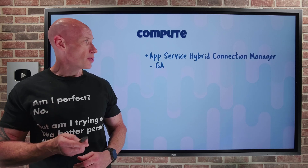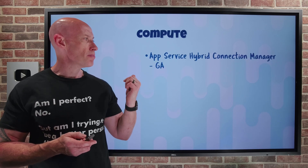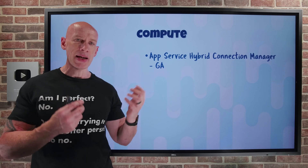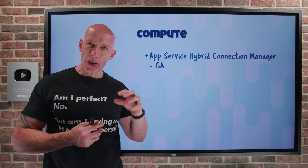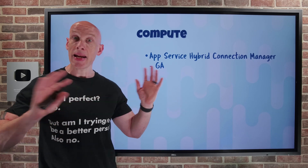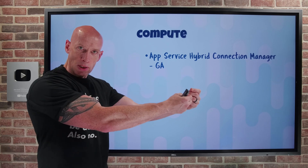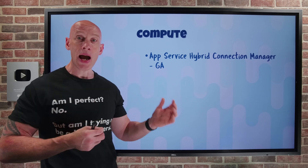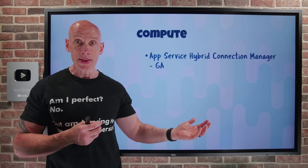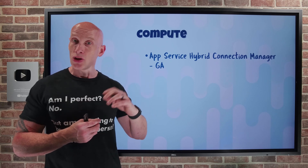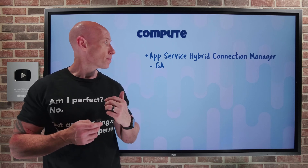On the compute side, the App Service Hybrid Connection Manager has gone GA. This enables App Service to talk to resources in any network. There's a relay agent placed in the target network, and it now works for Windows and Linux clients. It has better logging, a new GUI, and a new CLI experience.